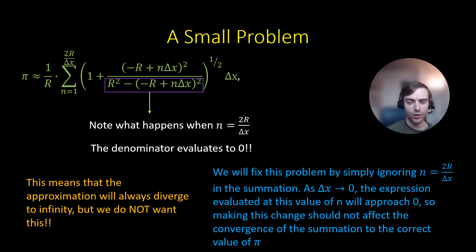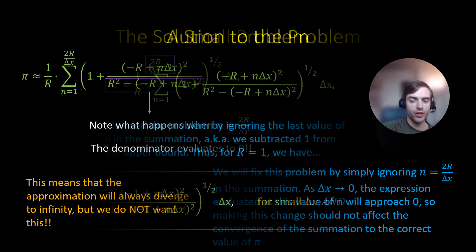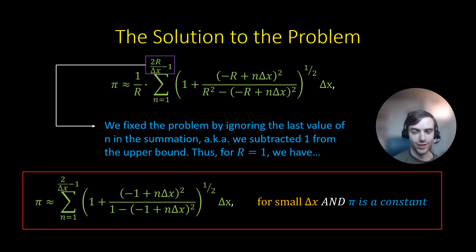So as delta x approaches 0, the expression evaluated at this value of n will approach 0. So making this change shouldn't really affect the convergence of the summation to the correct value of pi. So we're going to make this change. Sorry, I didn't put the animations in these slides. I've been working on this for too long. I just want to get this video finished. Anyway, so we solve this problem by ignoring the last value of n in the summation. We subtracted 1 from the upper bound. Thus, for r is equal to 1, we now have this same expression except we subtracted 1 in the upper bound.